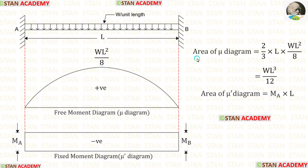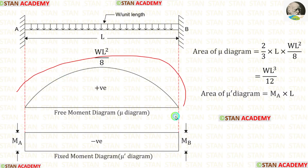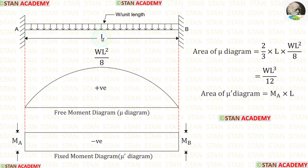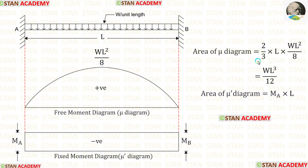Now let us find the area of the mu diagram. This is a second degree parabola. The area formula for this parabola is 2/3 into breadth into height. Here the breadth is L and the height is WL² upon 8. Using the formula we will get: 4 twos are 8, 4 into 3 we get 12, and L into L² we get L³.